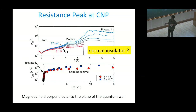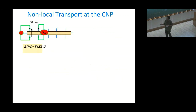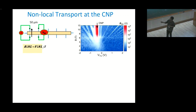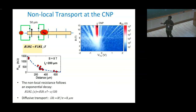We did additional non-local transport measurements, where we pass a current along one direction and measure the voltage far away from it. In the non-local measurement, we find an enhanced non-local signal only at the charge neutrality point above a certain magnetic field. As a function of distance, the non-local resistance decays exponentially, but the decay length is very large — around 200 microns — which cannot be explained using a diffusive model.